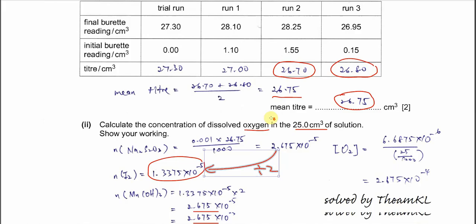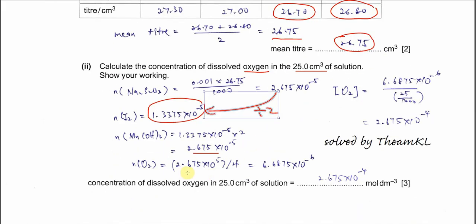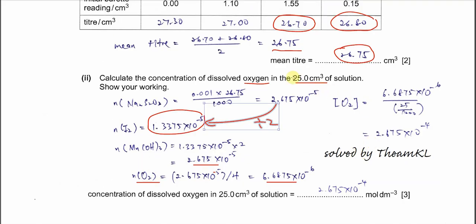This gives 2.675×10⁻⁵ ÷ 4 = 6.6875×10⁻⁶ mol of oxygen. This is the moles in 25 cm³. To find concentration, convert 25 cm³ to dm³ (25/1000) and divide moles by volume in dm³, giving a concentration of 2.675×10⁻⁴ mol/dm³.